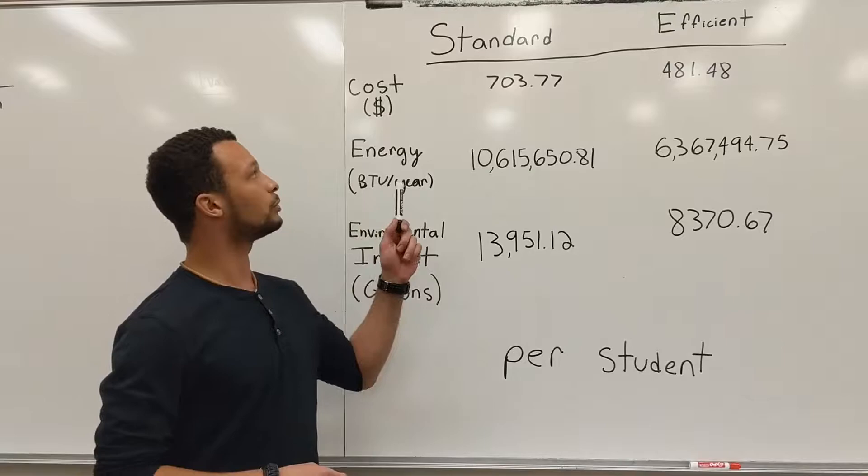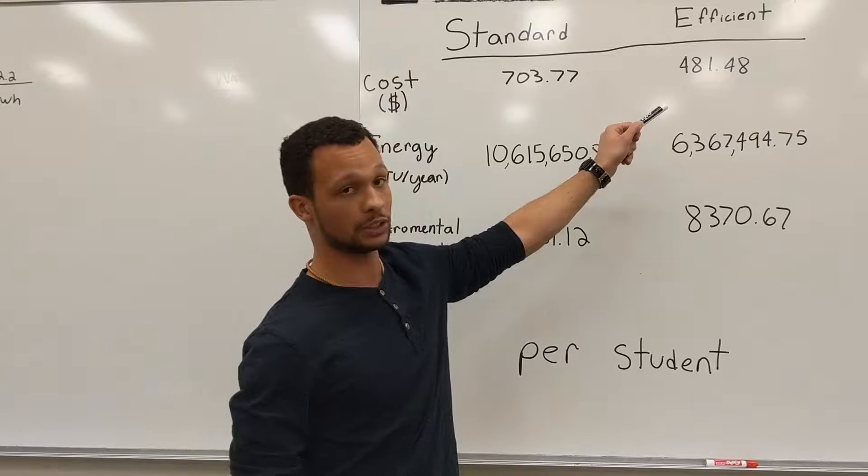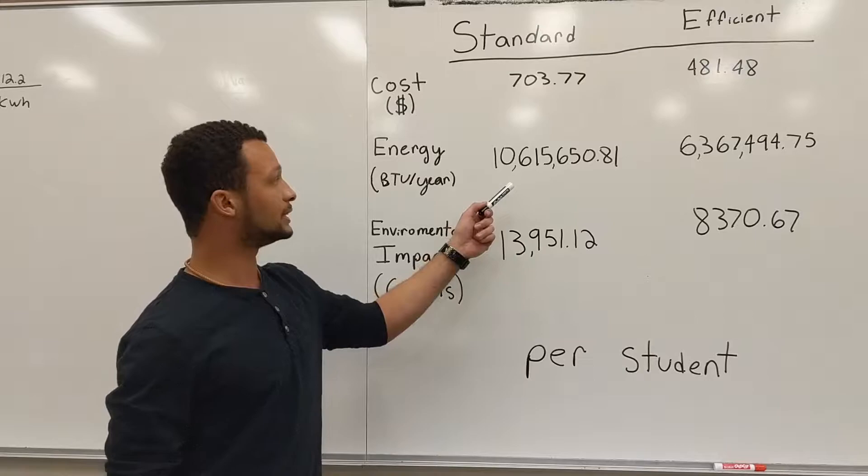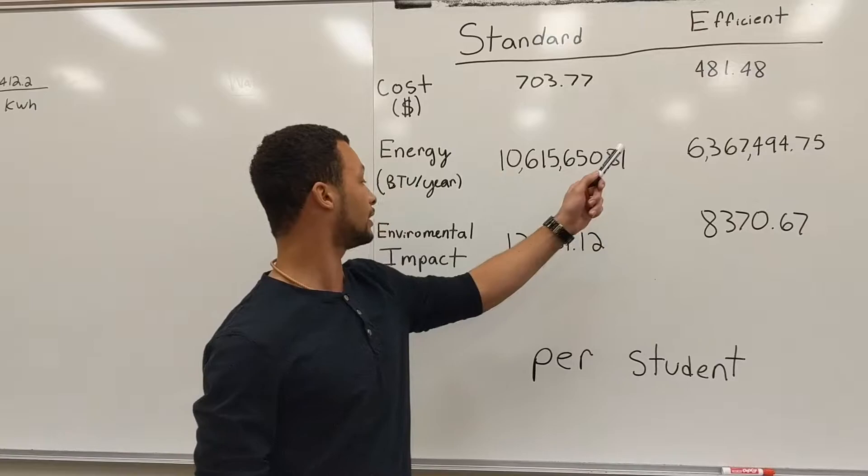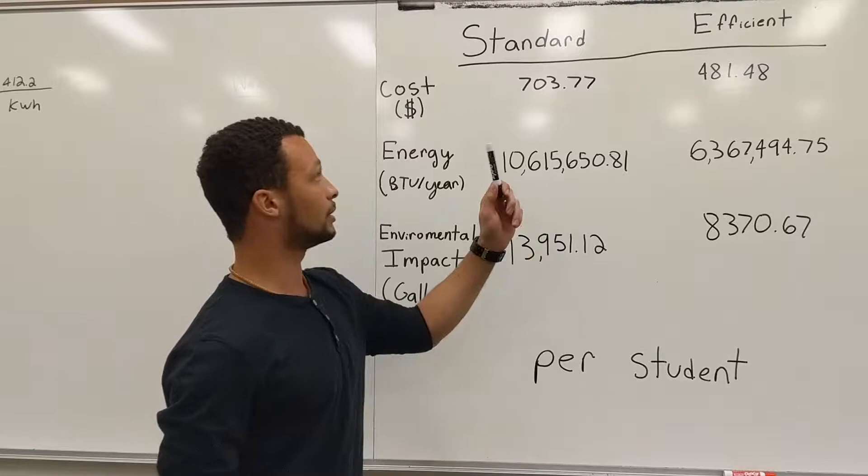A real quick recap on the comparison between the standard shower head and the efficient shower head. So in cost of dollars, it's $703 when you use the standard shower head, whereas it's $481 when you use the efficient shower head. In energy and BTUs per year, you're at 10.6 million with the standard shower head, whereas you're at 6.4 million with the efficient shower head. And finally, looking at the environmental impact, we're at almost 14,000 gallons per year with the standard shower head, and at about 8,300 gallons per year with the efficient shower head. This is all per student.